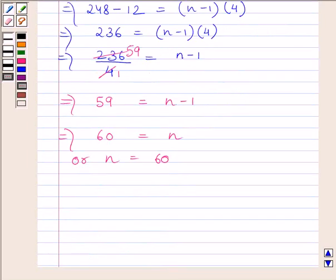Now we get total number of terms in the above AP is 60, or we can say there are 60 multiples of 4 between 10 and 250.